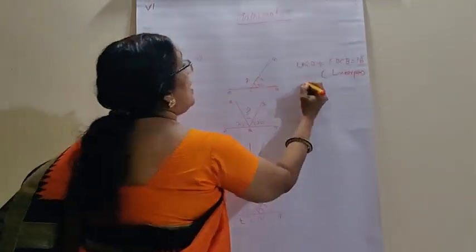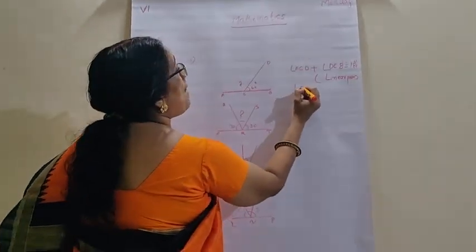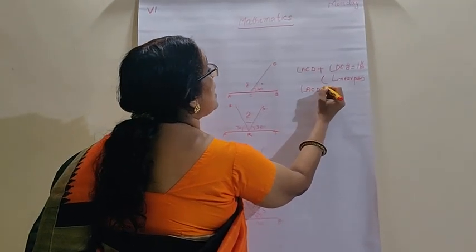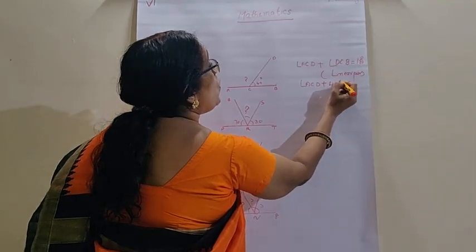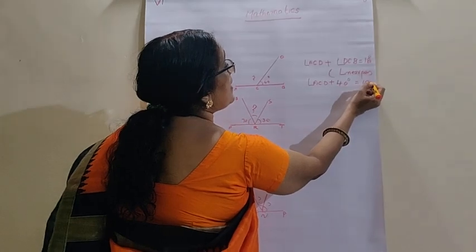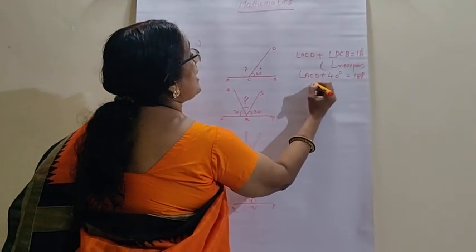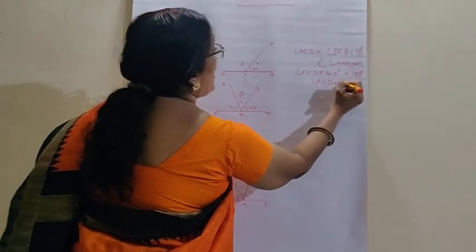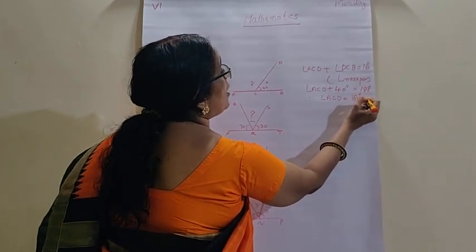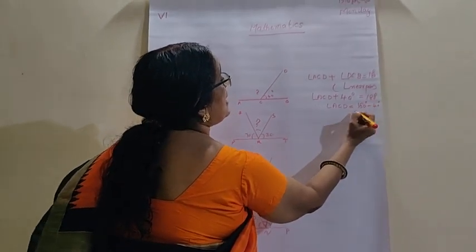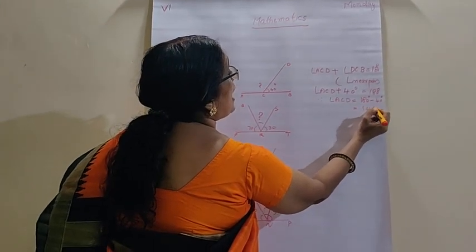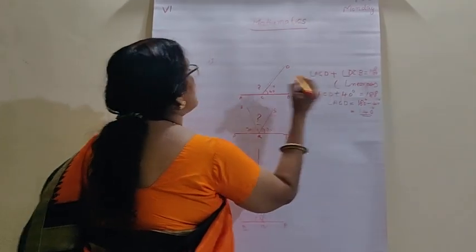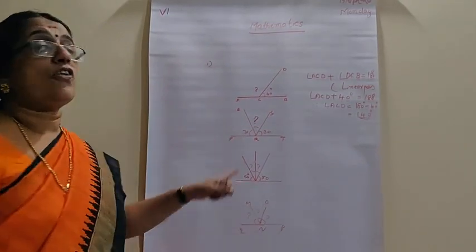So ACD plus 40 equals 180 degrees. Right children? So what is our ACD? Therefore ACD equals 180 minus 40 degrees, that is 140 degrees. So you got this angle as 140 degrees.